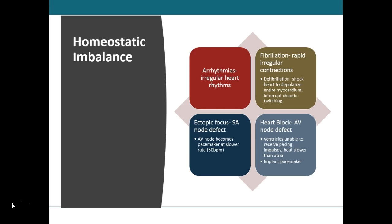Chest compressions should be given hard and fast at a rate of about 100 per minute and about two inches deep in adults, and this should be continued until medical professionals arrive. If you're wondering how to know what 100 times a minute feels like, you can use the Bee Gees song 'Stayin' Alive' to set your CPR rhythm.